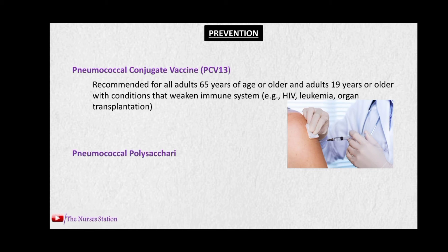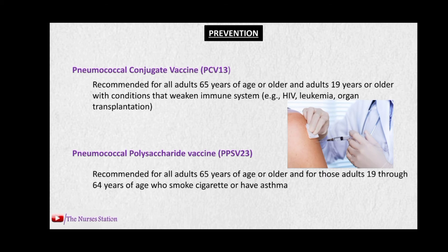The next is the pneumococcal polysaccharide vaccine PPSV23, active against 23 strains of Streptococcus pneumoniae. This is recommended for all adults 65 years or older and for adults 19 through 64 years of age who smoke cigarettes or have asthma.